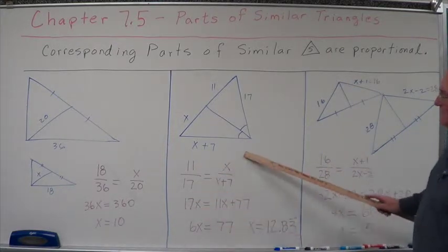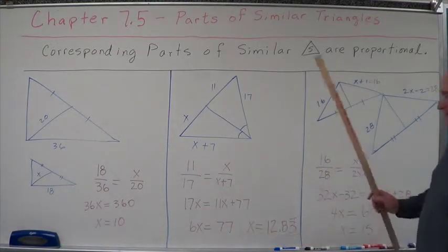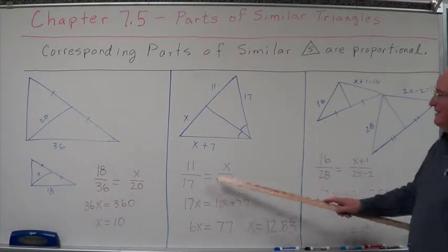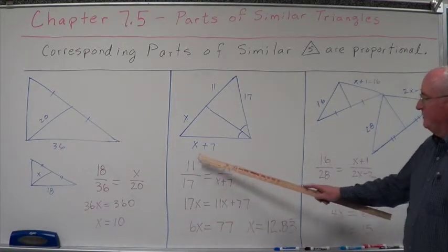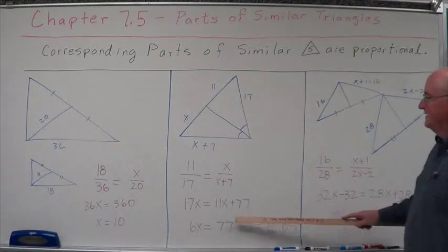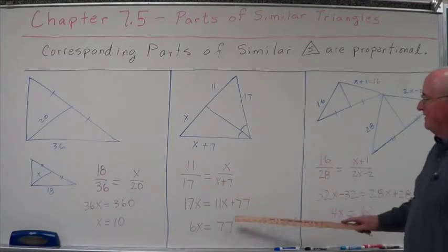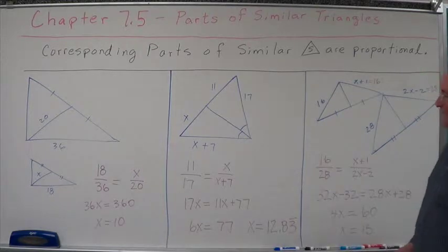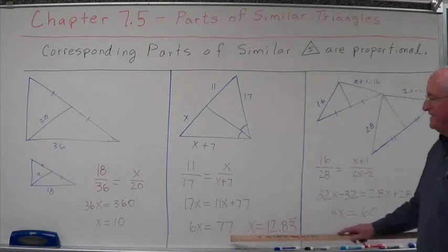So 11 is proportional to 17 as x is proportional to x plus 7. 11 is proportional to 17 as x is to x plus 7. We have to do a little algebra here. 17x equals 11 times x plus 11 times 7 is 11x plus 77.